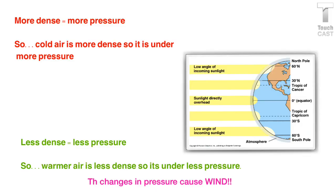So if the air is more dense, it's going to have more pressure. So cold air is more dense, so it's under more pressure. Less dense means there's less pressure. So warmer air is less dense, so it's under less pressure. So if it's at the poles, it's going to be under more pressure. And if it's at the equator, it's going to be under less pressure. It's the changes in this pressure that actually causes our wind.